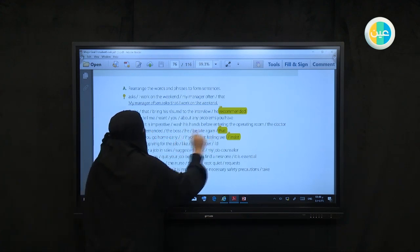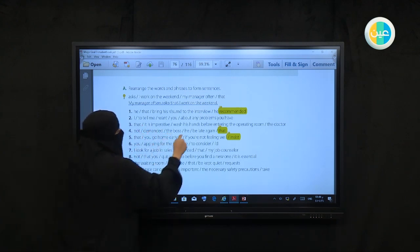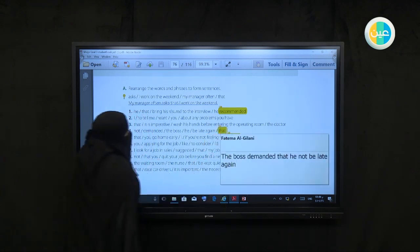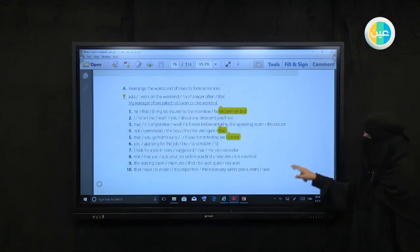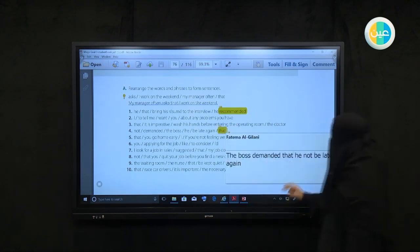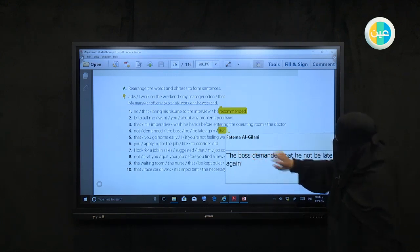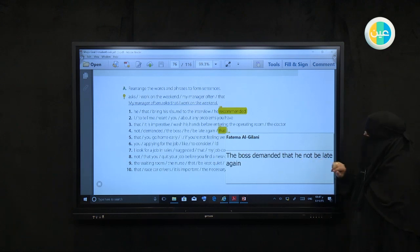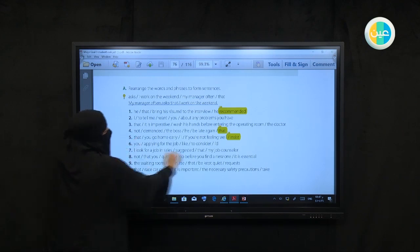Second example. Does this one have 'that' or not? Yes, it has 'that'. The boss demanded that he not be late. The boss demanded - this is the first verb, 'that' is the connector, 'he' is the person, 'not be' is the subjunctive. He insisted and demanded that he not be late again. You have all the components: the boss, the first verb, the connector, the person who is required to implement the subjunctive, 'not be' is the subjunctive at the end.